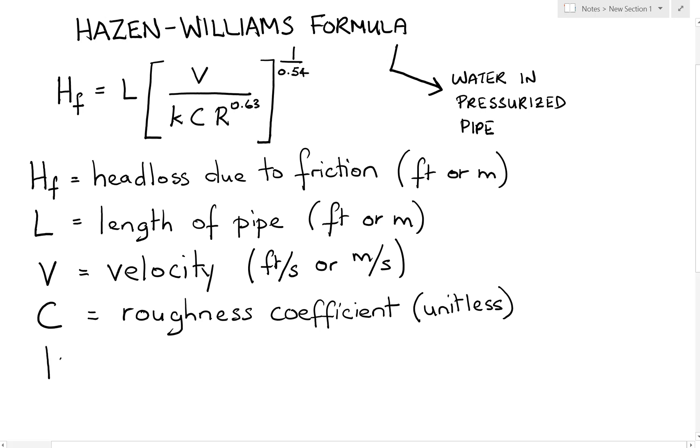Next up is k, which is a unit conversion constant. If you are in U.S. customary units, then it is equal to 1.32. And if you are in S.I., then it is 0.85.